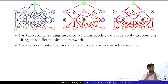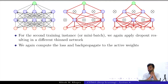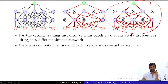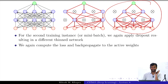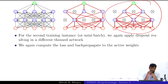The problem is that some of these networks may never even get sampled — there are 2^n of them and our data is definitely less than 2^n instances. Some networks might never get sampled, or be sampled very rarely. The probability of sampling the same network twice is very small.